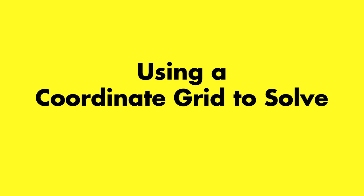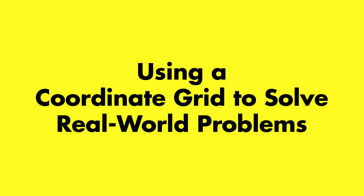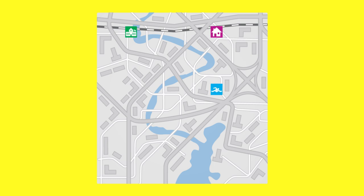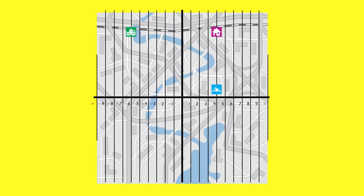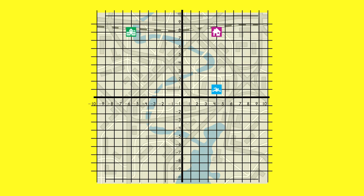Using a coordinate grid to solve real-world problems. You can use a coordinate grid and absolute value to find the distance between two places.